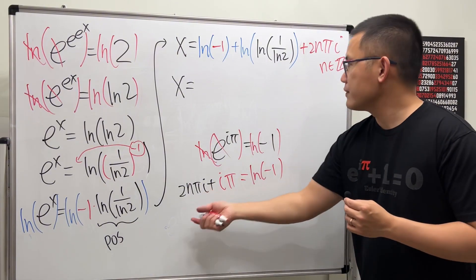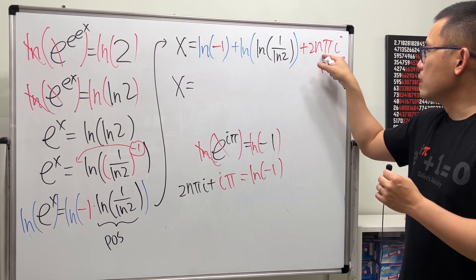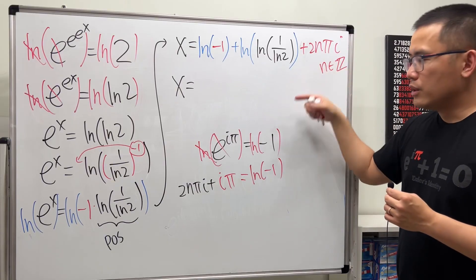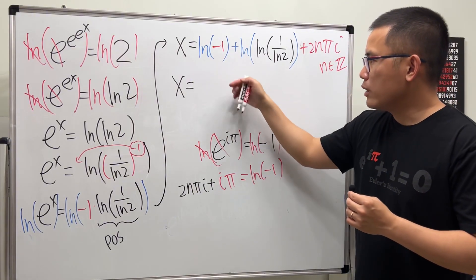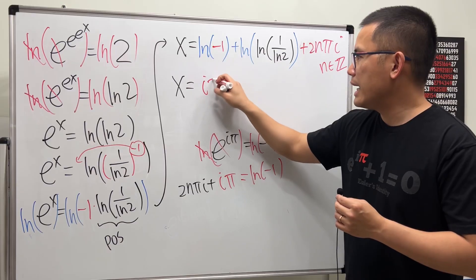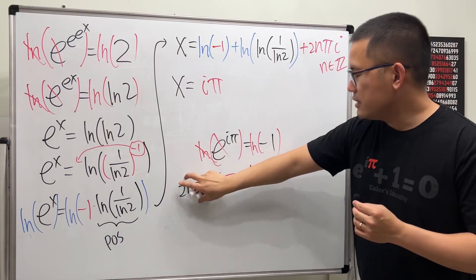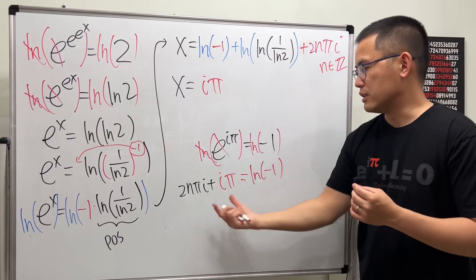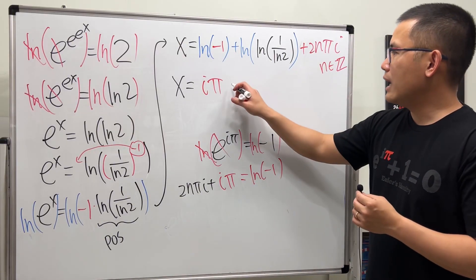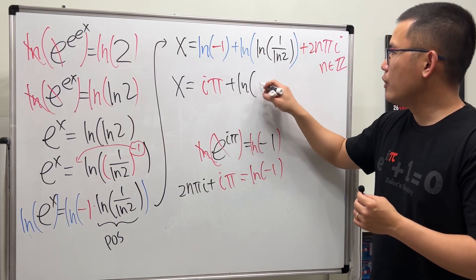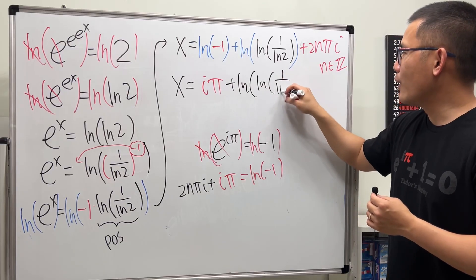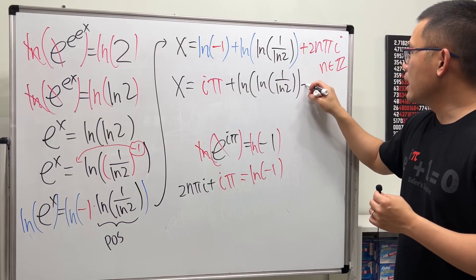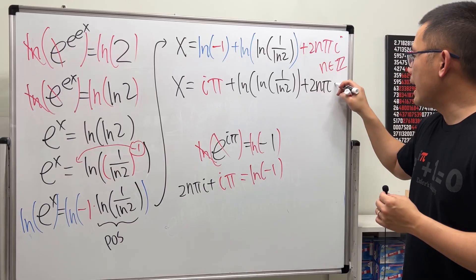But we already have such a constant multiple of i already. So, when I work this out, we can really just put down iπ. This and that can be merged into one of the expressions. And then we have plus ln of ln of 1 over ln(2) plus 2nπi.